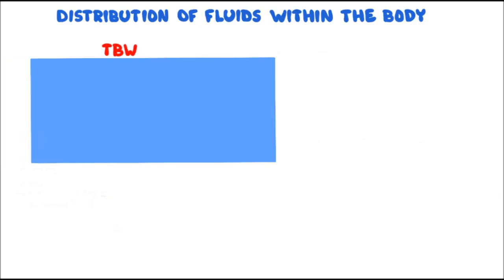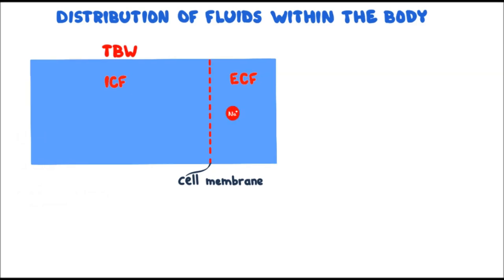Returning to our total body water: the membrane separating the intracellular compartment from the extracellular compartment is the cell membrane, which is also a selectively permeable membrane, like the membrane in our container. The distribution of fluid between the intracellular and extracellular compartments is determined by osmotic forces. In the extracellular fluid, the main dissolved substance that cannot penetrate the cell membrane is sodium ions, and these sodium ions create an osmotic effect across the cell membrane.